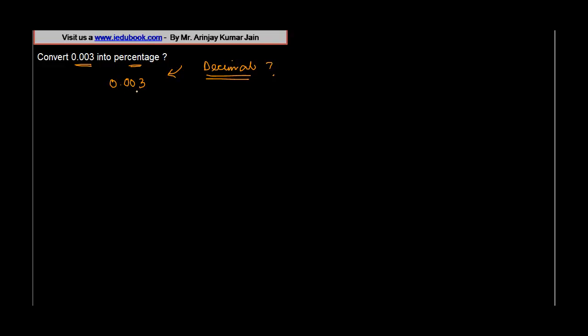Converting a decimal into percentage is extremely simple, right? So how do you do that? What you do in these cases is you multiply the decimal with 100, and that's it.